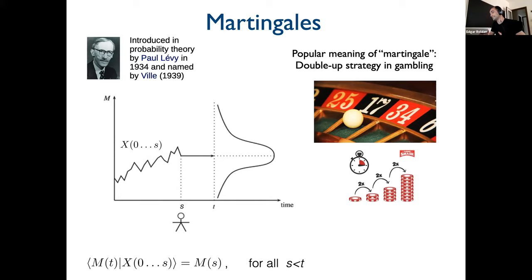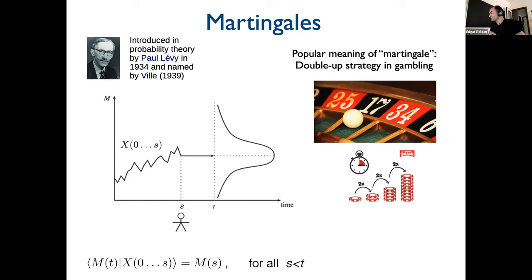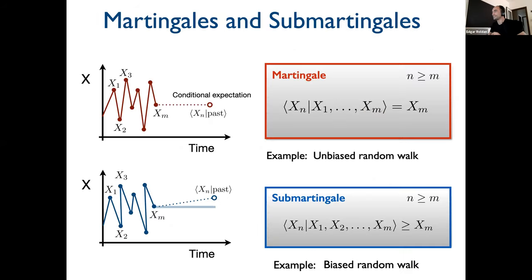This was introduced by Lévy in 1934 and also by Doob. Here you see a sketch: an observer looking at the process up to time s, and if I know the martingale up to time s, what I expect in the future is that its average equals the value at time s. There is also a popular meaning of 'martingale' — a double-up strategy in gambling — where you go to the casino, lose, then bet double, and so on. That strategy is valid only if you have infinite money. That is not the martingale I'm talking about.